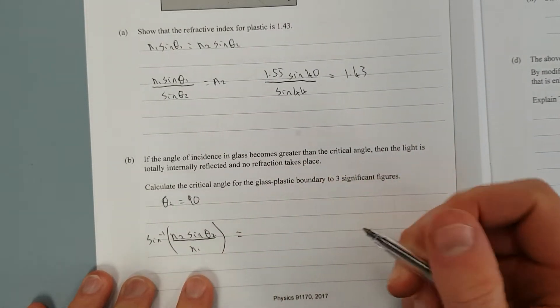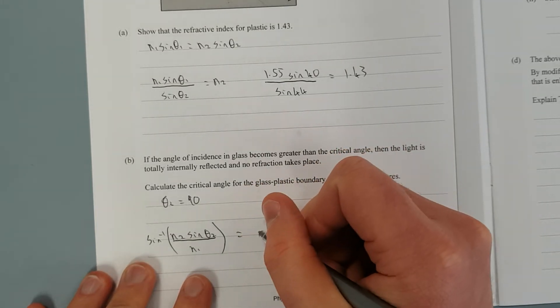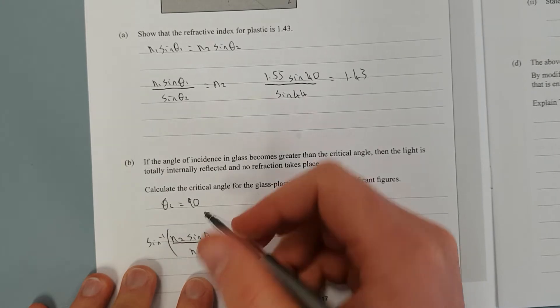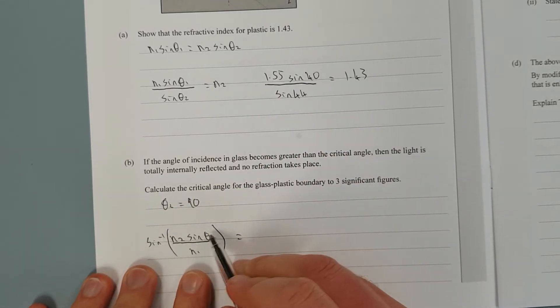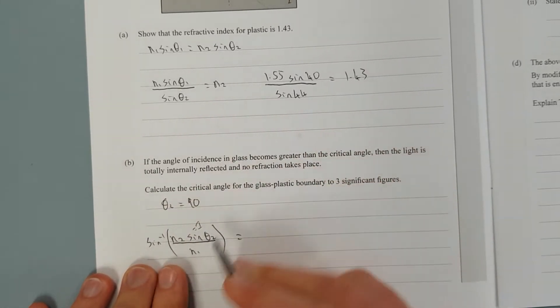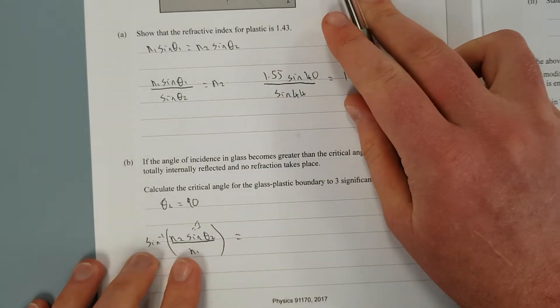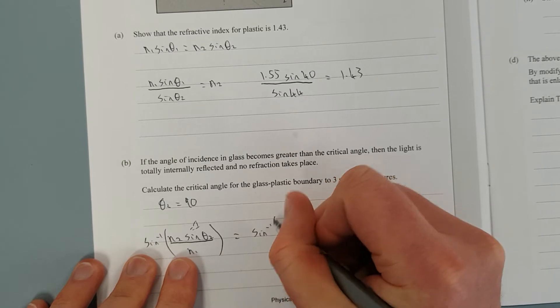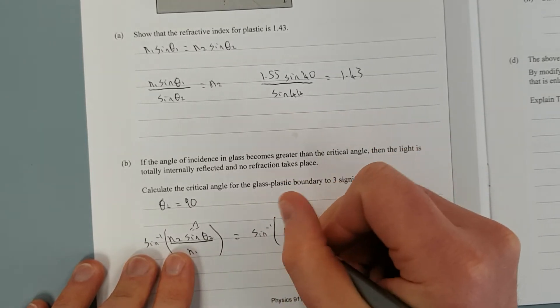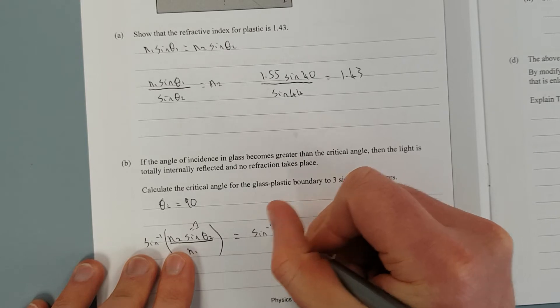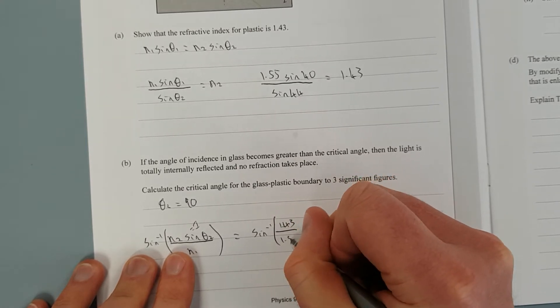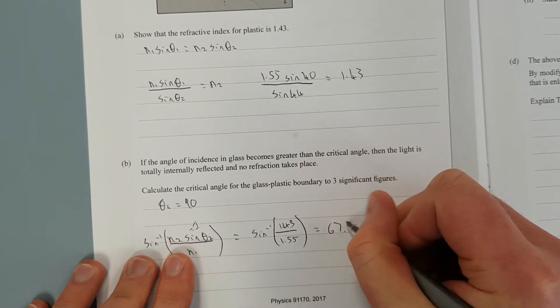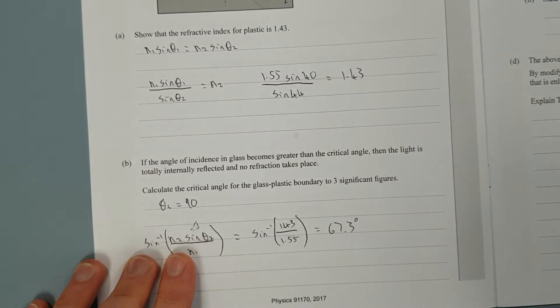Put the numbers in. Sin θ2 or sin 90, that's just equal to 1. So you've just got sin inverse 1.43 over 1.55 is equal to 67.3 degrees. Cool.